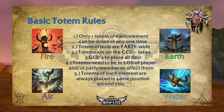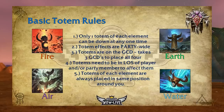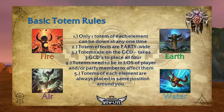Now let's go over basic totem rules. Only one totem of each element type can be down at any one time. Totems are separated by elements — there are four: fire, earth, air, and water. Totem effects are either player or party-wide. If you are by yourself, only you receive the benefits. If you're in a party, your entire party receives the benefit if they're in range of the totem. For example, if you're a shaman in a raid group and you put a Windfury Totem down in the melee section, only the melee in your group receive that benefit.